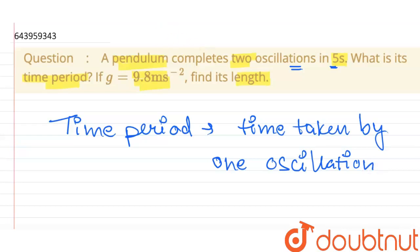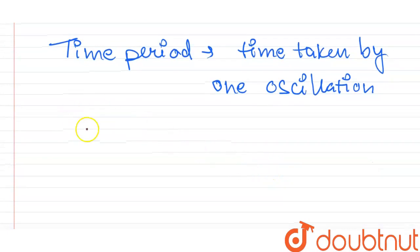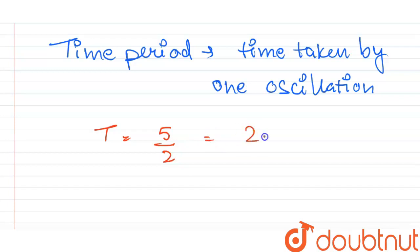If two oscillations take five seconds, so time taken by one oscillation will be five divided by two, that is two point five seconds. So this will be the time period of the pendulum.